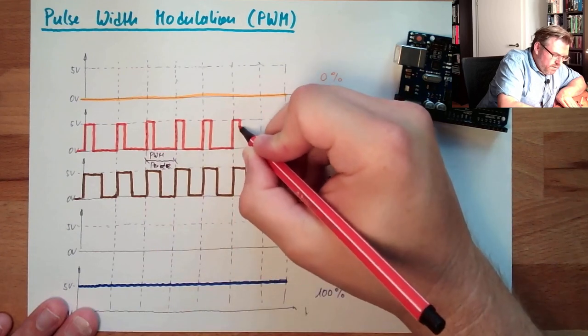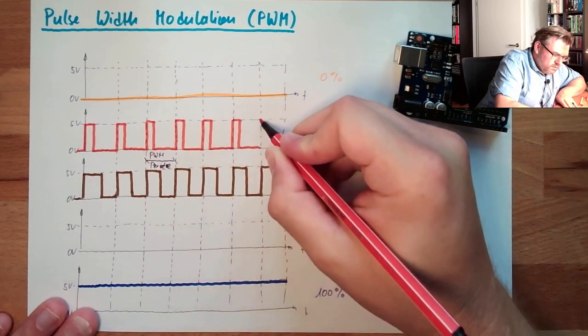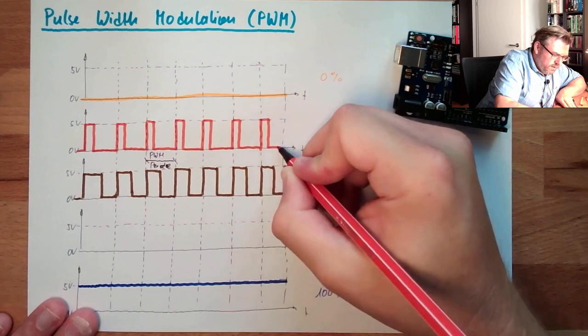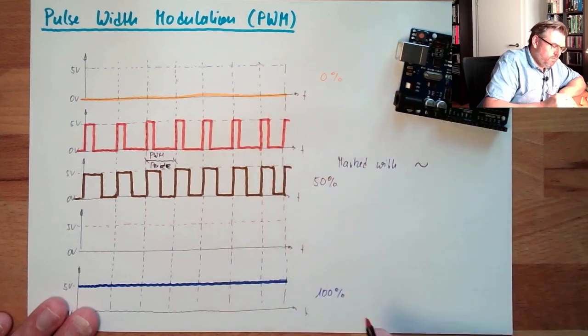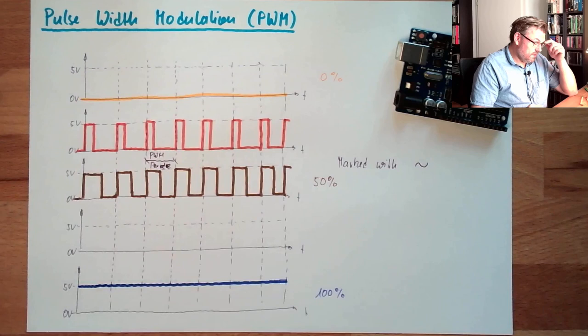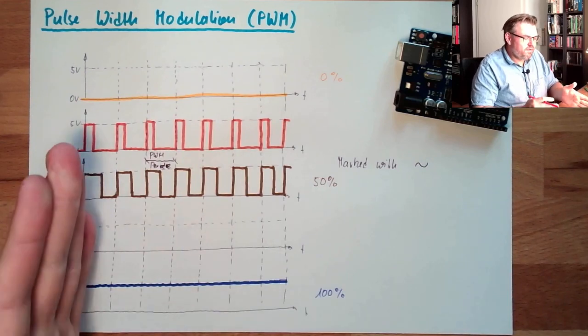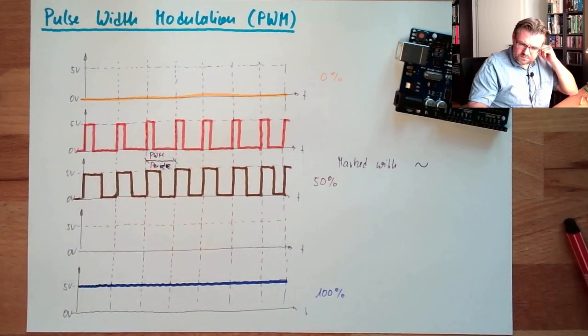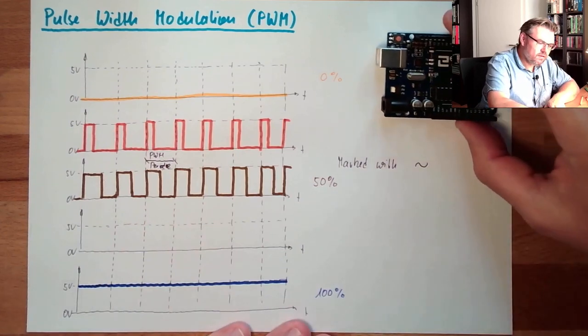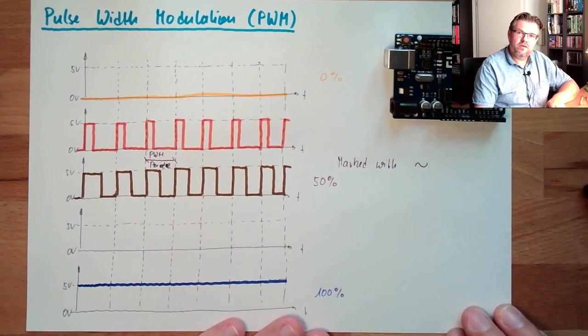This PWM period should be, of course, a constant value. I have not managed to do this here in my schematic perfectly. It's a very constant frequency. Depending on the pin, there are different PWM frequencies.